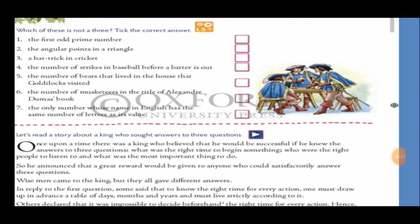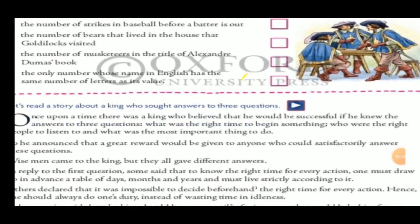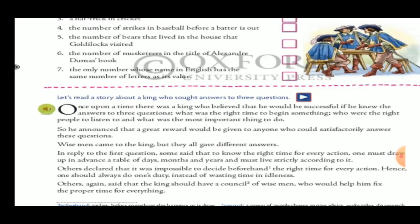Now the chapter activity is over. Let's read a story about a king who sought answers to three questions. There was a king who was bothered by three questions, to which he was searching for answers. He asked everyone who was wise or clever in his kingdom, but no one satisfied him with an answer.